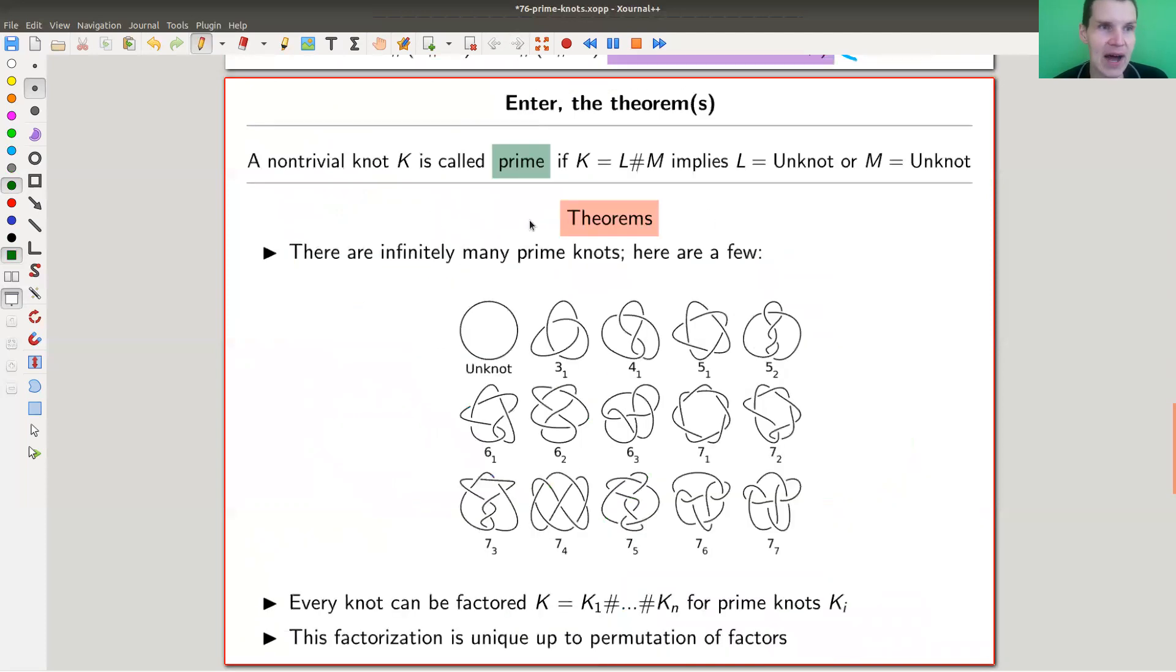And a knot is called prime exactly if you can't factor it using a connected sum, right? So that's exactly how you would write down what a prime number is, and non-trivial knots. So the unknot is not a prime knot, like one is not a prime number. A questionable definition, but let's just go with it. So the unknot is not a prime knot, one is not a prime number, and the definition of a prime knot or of a prime number is that you can't factor it into non-trivial factors. Really the same definition. And okay, that's not very surprising. That's how we wanted to build it anyway. Surprising, and these are now the theorems here, is that you get exactly the same statements as for numbers. Very, very cute.